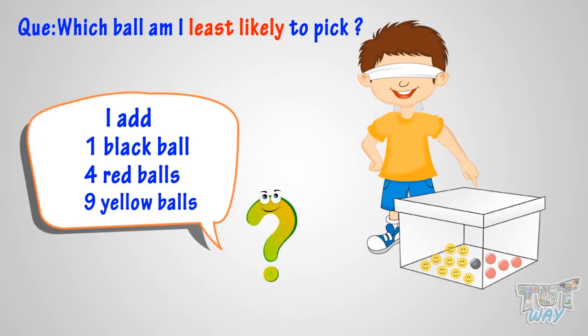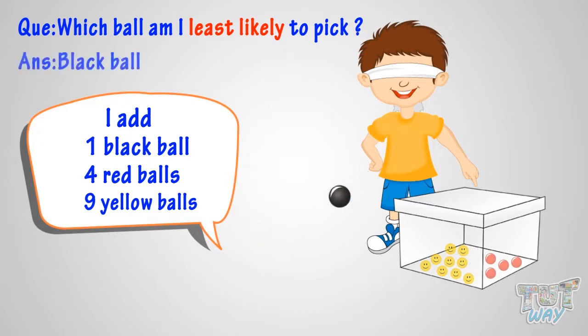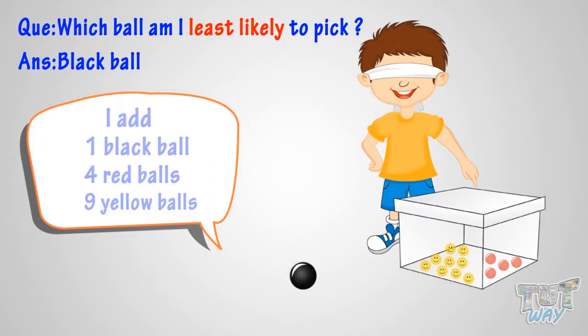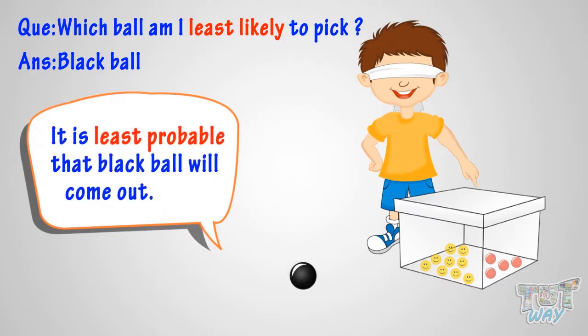Least likely? Black ball. Because there is only one black ball in the box, so it is least probable that the black ball will come out.